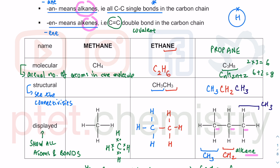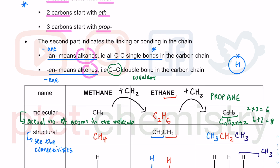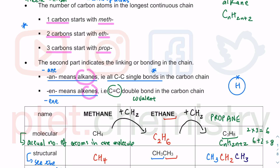Going back to methane: one carbon, the molecular formula and structural formula are exactly the same — just CH4, since there is only one carbon bonded to four hydrogens. Going from CH4 to C2H6, you add one carbon and two hydrogens. From C2H6 to C3H8, you again add one carbon and two hydrogens — that is another CH2. For every member of the alkane family, you add CH2. The general formula is CnH2n+2.